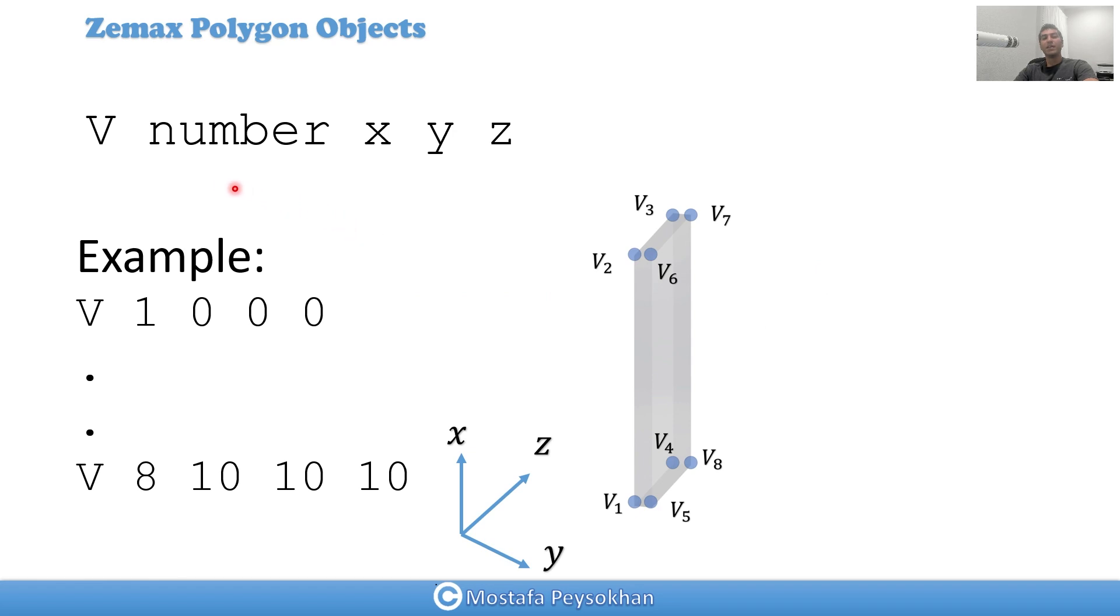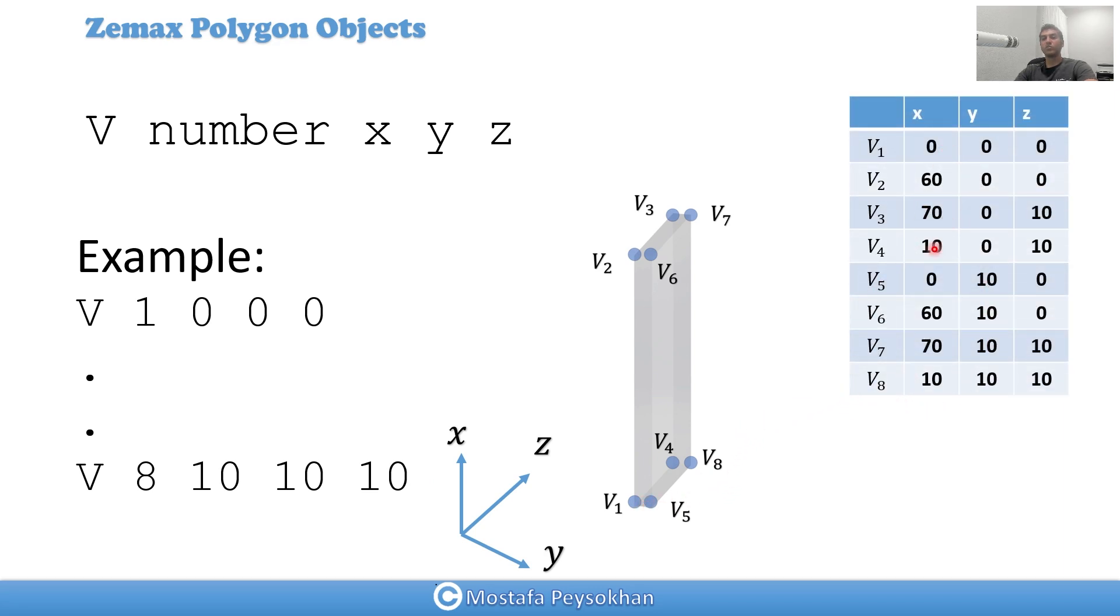In Zemax, for vertices, we put V number X Y Z. For example, here, my vertex number 1, we put V space 1, and the coordinate 0, space 0, 0. So that's V1. Then do the same from the spreadsheet. If you can write your own code also, V2, V3, V4, V5. And then for V8, which is the last one, as an example, we have 10, 10, 10 for the coordinate. 10 is X. Actually, I explained it before, and this is the spreadsheet. So you just put those numbers, V1, V2, V3, V space, the number, and then three spaces with coordinate X Y Z.